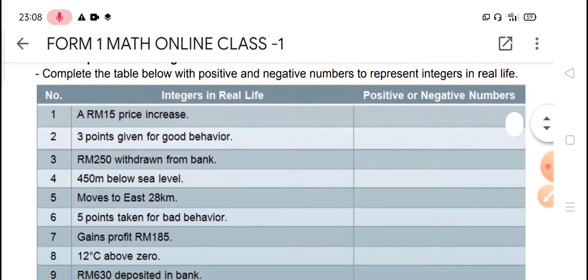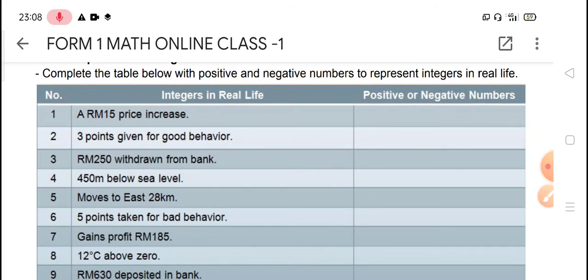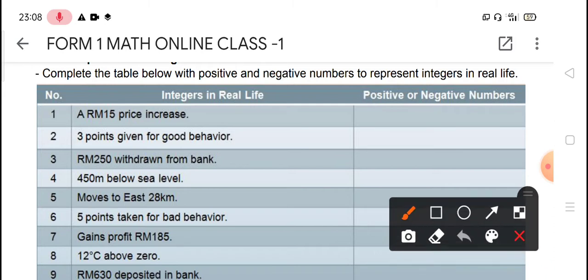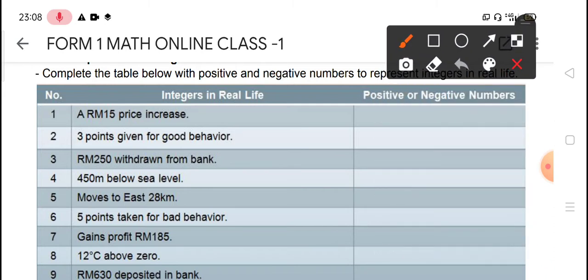Okay, so now we move on. The first practice will be this. You will still remember what we had done. A price, a RM15 price increase. Increase is positive, so we put positive 15. Number two, three points given for good behavior. So we gain three marks, we get three marks, positive three.